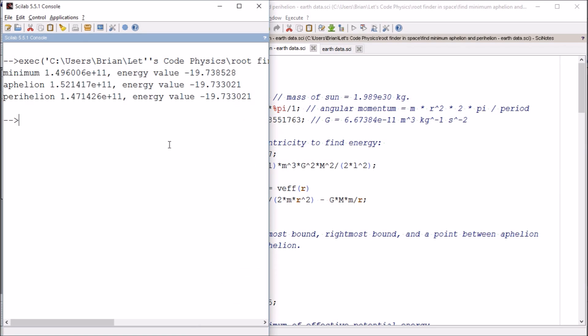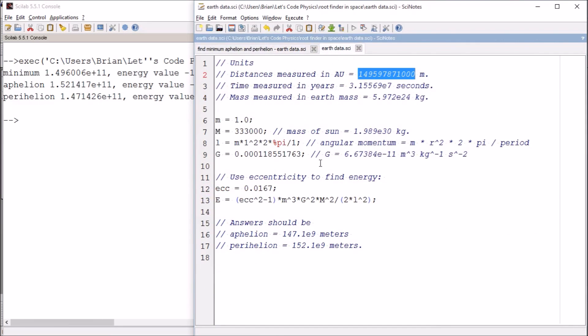So let's see. So the energy value doesn't change all that much, right? So that's a good thing. So let's see. So the minimum is at about 1.4, is at 1.496 times 10 to the 11. So these are in times 10 to the 11. These are recorded in terms of times 10 to the 10. So let's check it out. The aphelion.